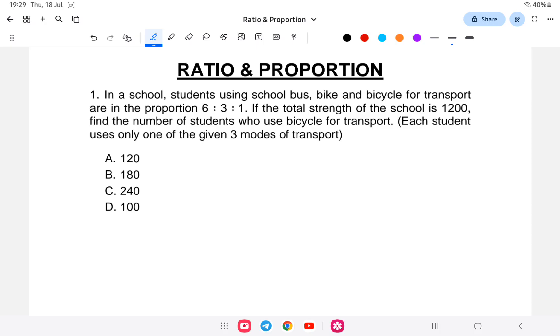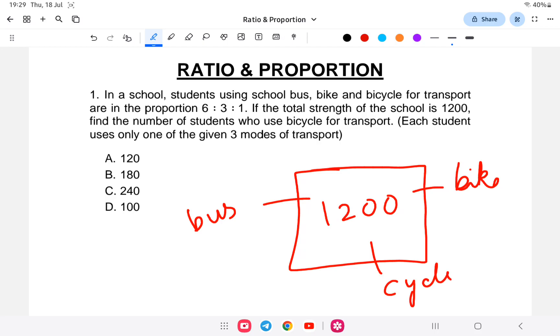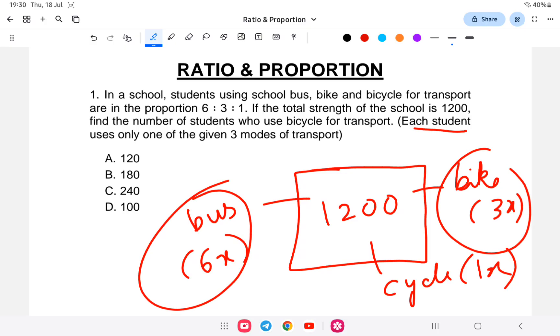Each student uses only one of the given three modes of transport. So suppose the school there, total school students are 1200. The bus level is 6, bike level is 3, and cycle is 1. It is given that each student uses only one mode. The question asks how many use bicycle out of 1200 students.